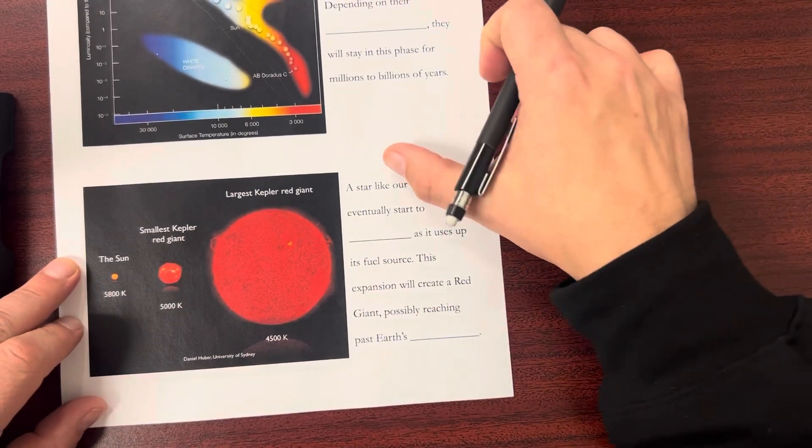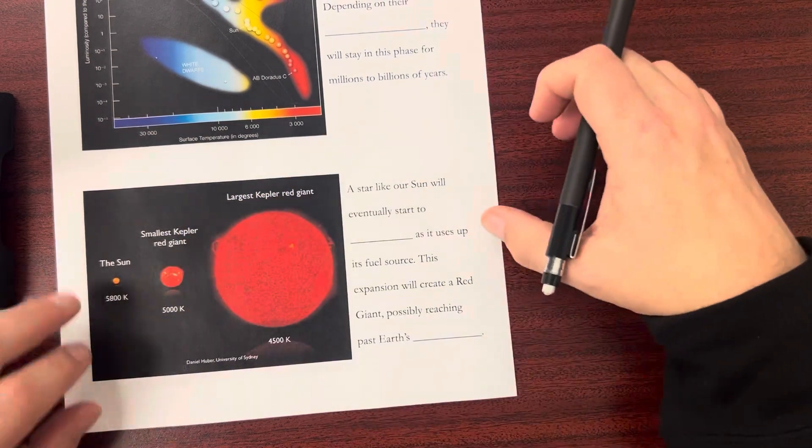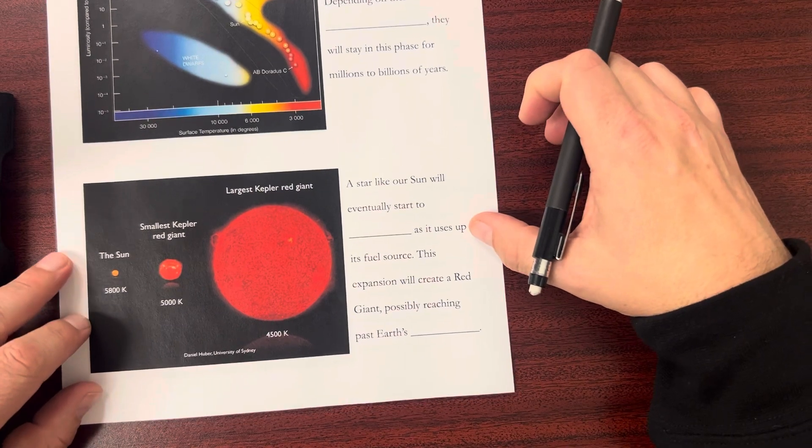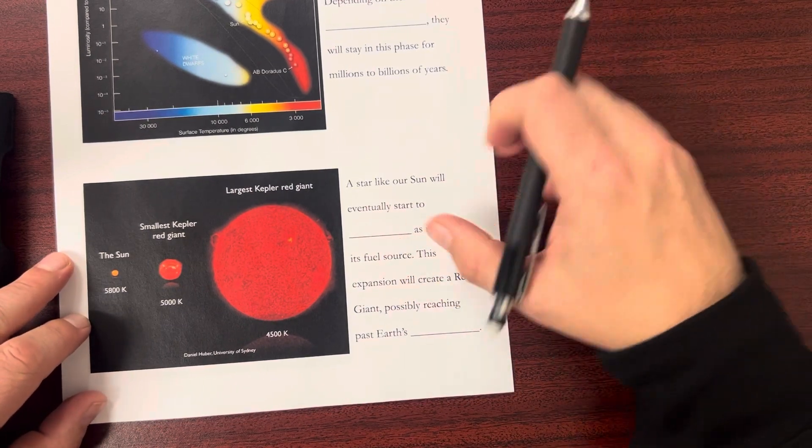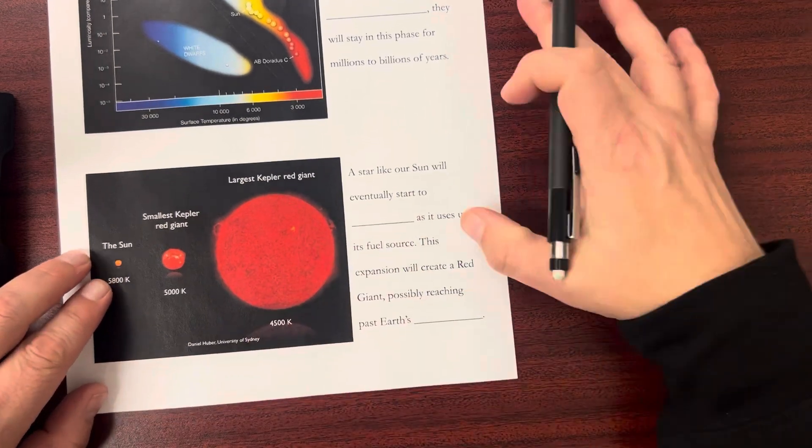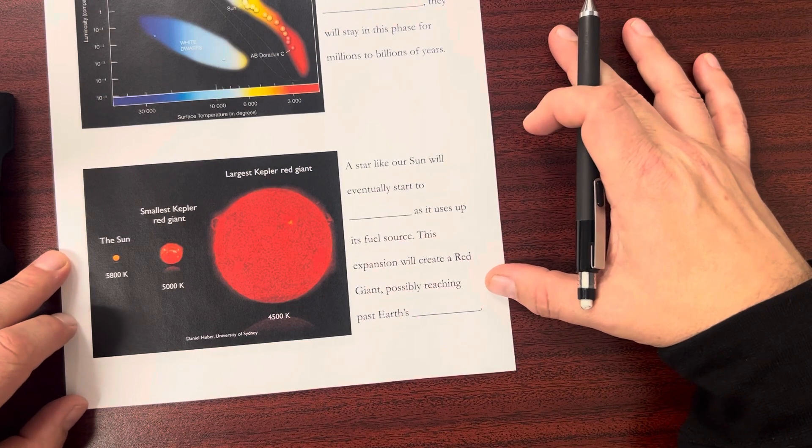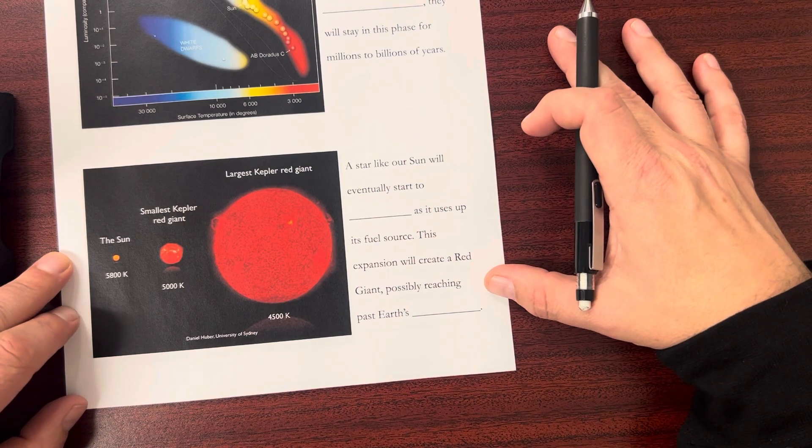A star like our sun will eventually start to expand as it uses up its fuel source. Towards the end of life, it gets bigger and bigger. The expansion will create a red giant, possibly reaching past Earth's orbit.